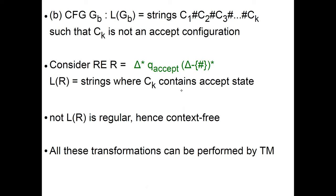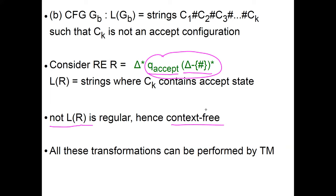For grammar GB — strings where CK is not an accept configuration — we consider a regular expression R of the form delta star, then an accept state, then delta-minus-pound star, so the last configuration contains accept. We take the complement of L(R), which is regular, and hence context-free. All these transformations can be performed by a Turing machine, giving us a context-free grammar GB for case B.